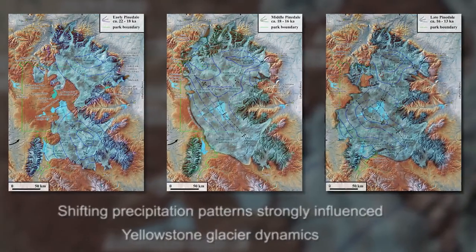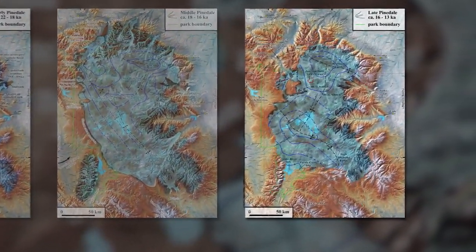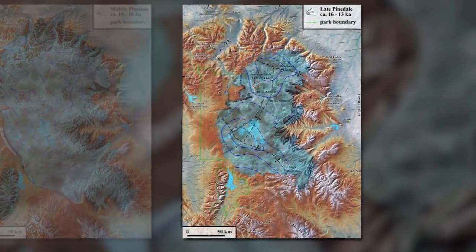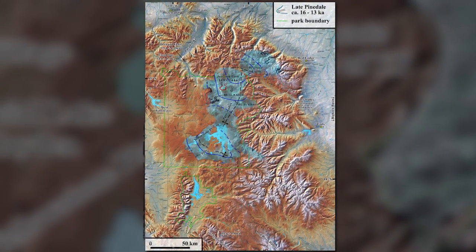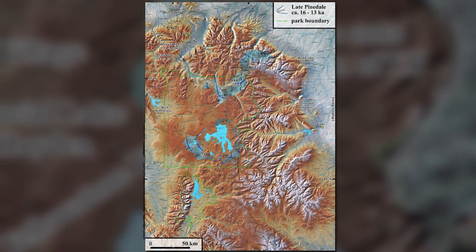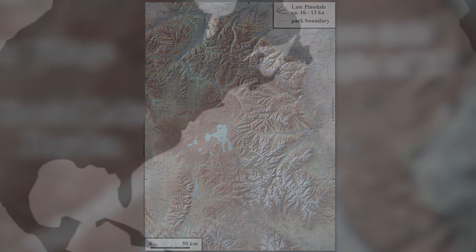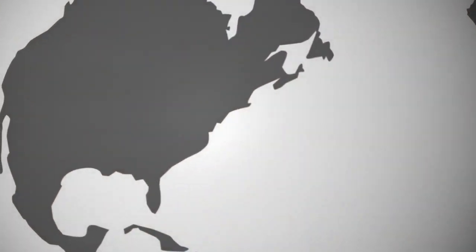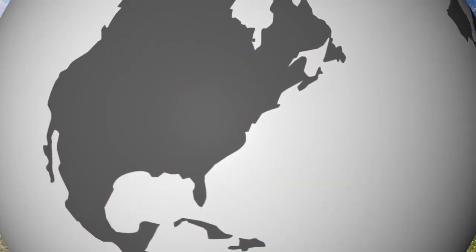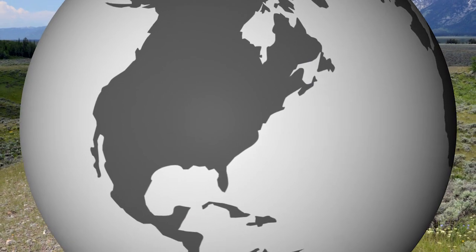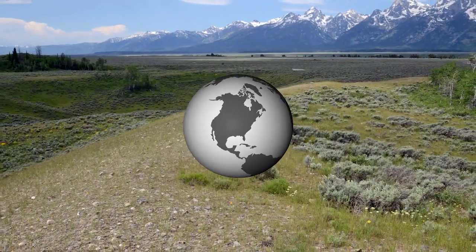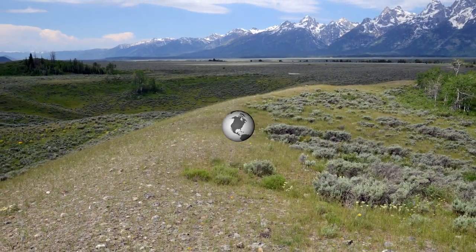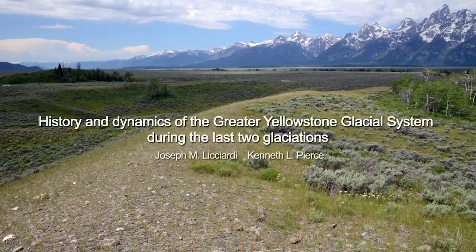De-glaciation in Yellowstone occurred from 15 to 14,000 years ago, in response to a warming climate. Unloading of the ice cap was not accompanied by volcanism, indicating that the magma chamber beneath Yellowstone was not primed to erupt via decompression during the last deglaciation.